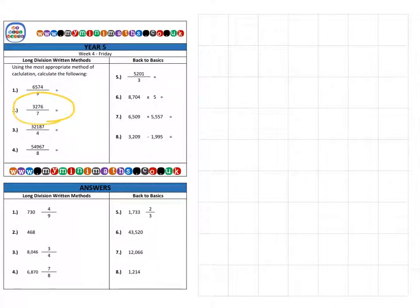Next we're on to question two, which is 3,276. And I'm dividing by seven. So, again, if I write this in my formal method down the bottom. So that's 3,276 and I'm going to divide that by seven.